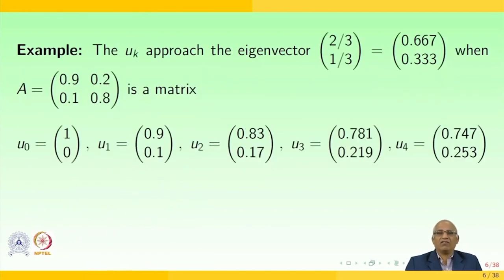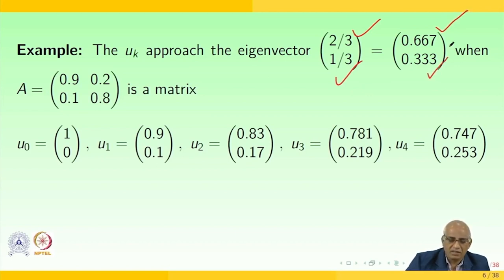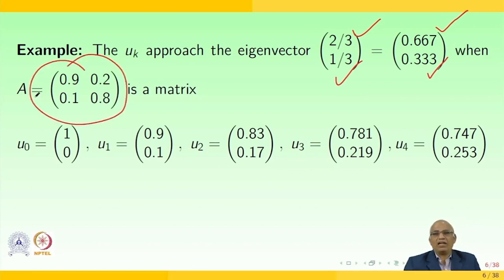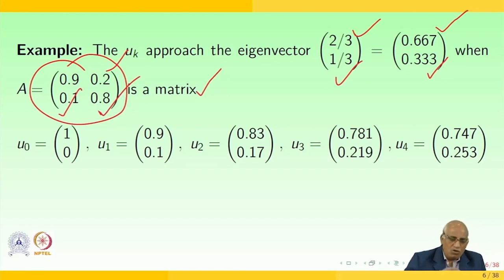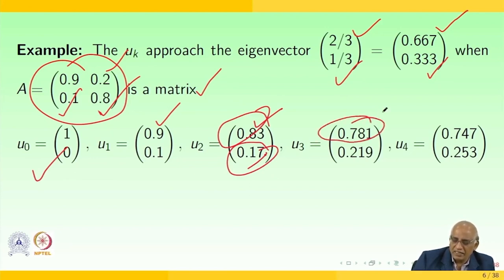From the example, the uₖ approach the eigenvector (2/3, 1/3, 1/3), i.e., approximately (0.667, 0.333). When the matrix A is [[0.9, 0.2], [0.1, 0.8]], starting from u₀ = (1, 0), we get u₁ = (0.9, 0.1), u₂ = (0.83, 0.17), and so on — with the first component increasing and the second decreasing, converging iteratively.